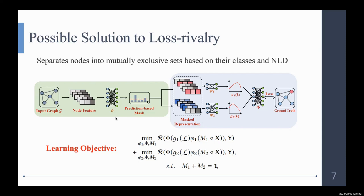And we will apply different aggregation mechanisms to these two sets. And we elevate the problem of loss rivalry and the model can converge.